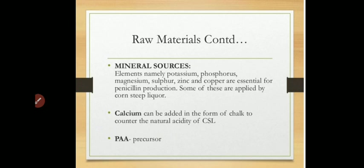Raw materials also include different mineral sources. Potassium, phosphorus, magnesium, sulfur, zinc, and copper are very essential for penicillin production. Some of these minerals may be supplied by corn steep liquor as well, since corn steep liquor, which is a great source of nitrogen, also contains small amounts of mineral sources.